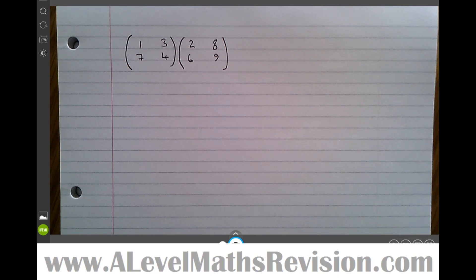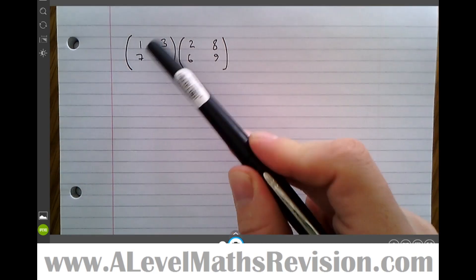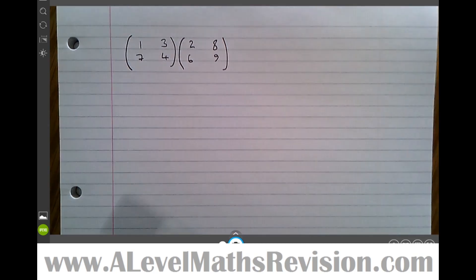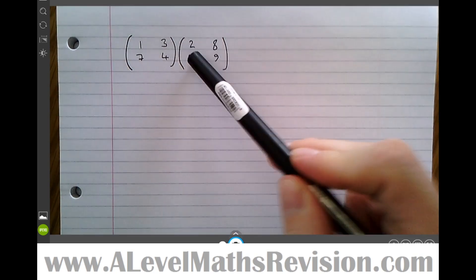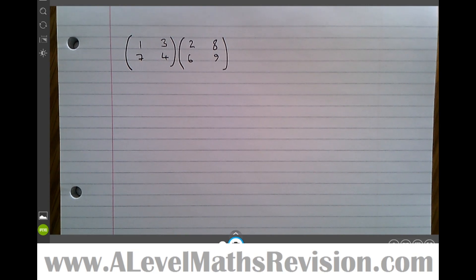We've got these matrices here: we've got 1734 times 2689. The reason I read them out in columns rather than rows is because I think of matrices as being vectors that are stuck together.